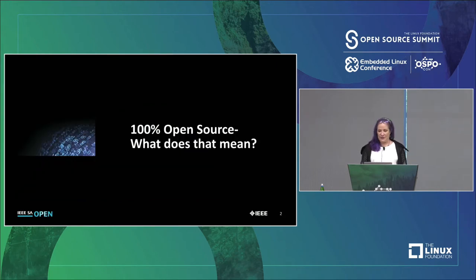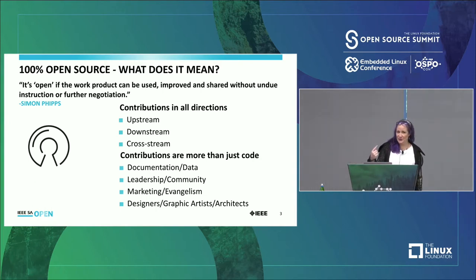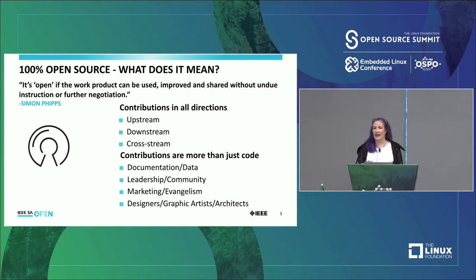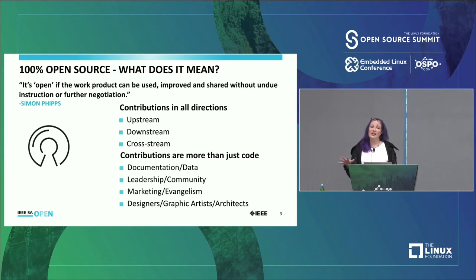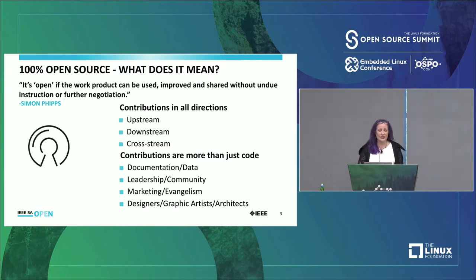What do I mean by 100% open source? I mean open source in all the directions — using open source tools, contributing back upstream to those tools, downstreaming all of the other different aspects that you do for running those tools. For example, right now we're working on having a containerized BigBlueButton platform and cross-streaming with other groups for any changes they may be adding into your platform through good branching methodologies. Contributions are more than just code. It doesn't just end with Git. You have documentation, leadership, marketing and evangelism — all of these other types of assets that you need to look at and work towards.